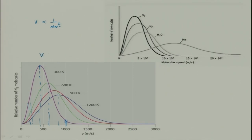Velocity is proportional to T^(1/2) and inversely proportional to the square root of molecular weight. For oxygen, the molecular weight is higher, so the molecular speed is lower and more particles have lower velocity. For nitrogen, then water, and then helium — helium is a very light gas, so more of its particles have higher velocity.